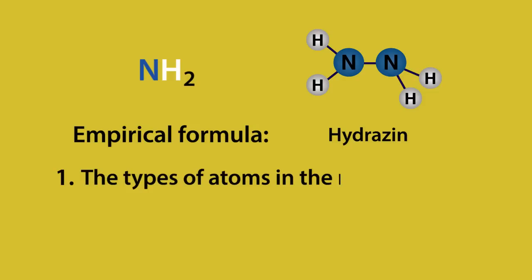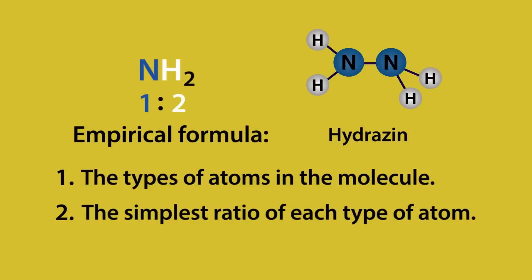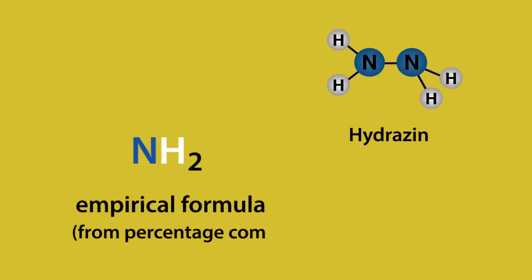The empirical formula of a compound also tells us two things: one, the types of atoms in the molecule — in this case nitrogen and hydrogen — and two, the simplest ratio of each type of atom. The ratio of nitrogen to hydrogen in hydrazine is two to four, making the simplest ratio one to two.